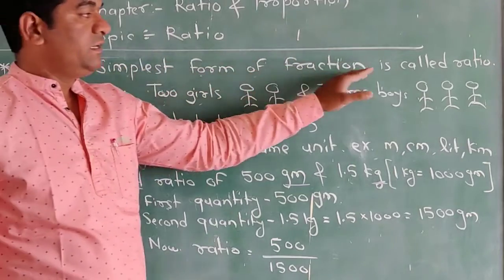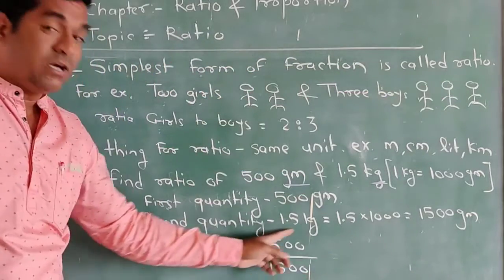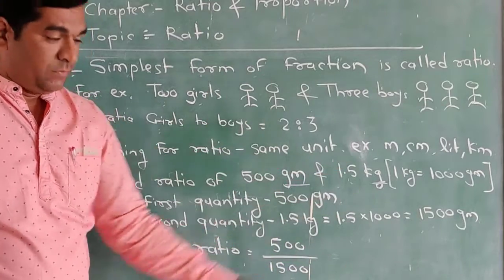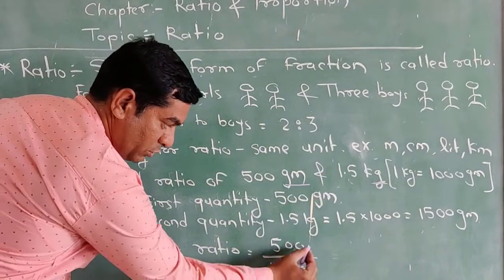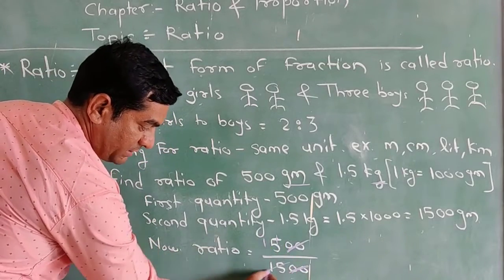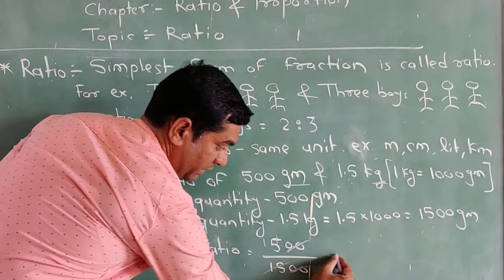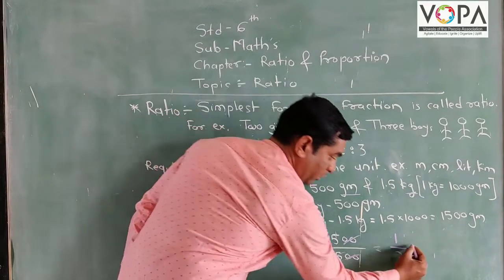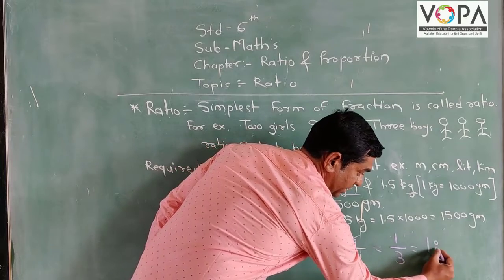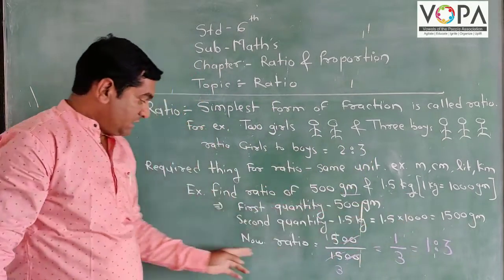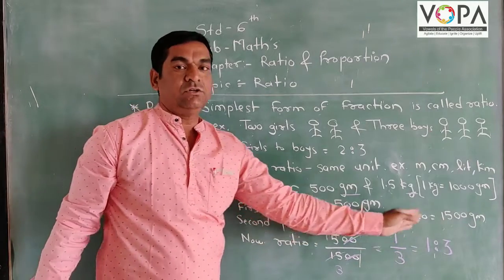As we said, the simplest form of a fraction is called a ratio. Right now it is not a ratio because it is not in simplest form. So we make it simplest form. Both zeros cancel out, dividing by 100. We get 5/15. 5 divided by 5 is 1, 15 divided by 5 is 3. Then the ratio will be 1:3. So the answer to this question is 1:3.